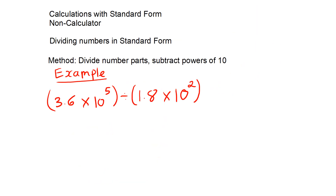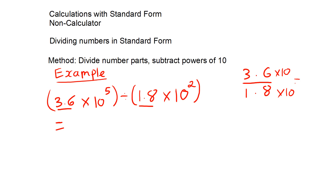To divide numbers in standard form, we divide the number parts and then subtract the powers of 10, because when we divide and the bases are the same, we subtract the powers. So in this question, I have 3.6 times 10 to the 5 divided by 1.8 times 10 to the power of 2. I write 3.6 over 1.8 as a fraction, multiply numerator and denominator by 10 to get 36 over 18, which is 2. Then subtracting the powers of 10 gives 2 times 10 to the power of 3.